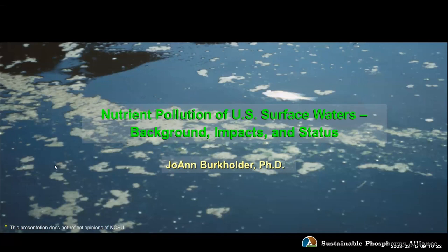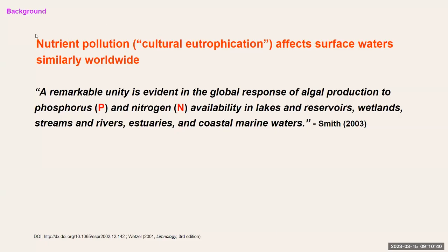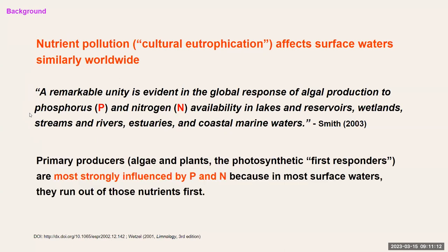I was asked to talk about the general background of nutrient pollution in U.S. surface waters, moving from background to impacts to the status of this issue. Nutrient pollution, also called cultural eutrophication, affects surface waters similarly worldwide. As the late Val Smith noted, a remarkable unity is evident in the global response of algal production to phosphorus and nitrogen availability in lakes and reservoirs, wetlands, streams and rivers, estuaries, and coastal marine waters. The two most problematic nutrients are phosphorus and nitrogen — primary producers like algae and plants run out of these first, because in most surface waters they are the limiting nutrients.